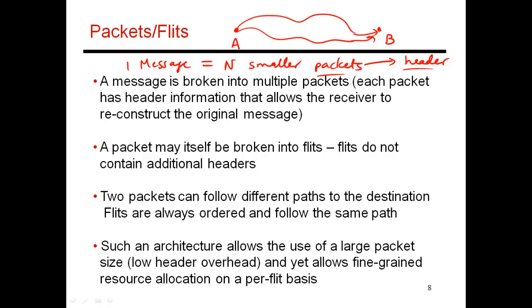Every packet needs a header, which means I can't make my packets extremely small, because if I do, that header overhead starts to increase. Assume the header is about two bytes in size. If my packet is 64 bytes, then a two-byte overhead is tolerable. But if my packet size is only eight bytes, that's a fairly significant overhead — about 25% overhead in terms of energy and in terms of consuming the available bandwidth.